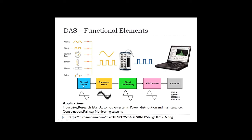The physical system has physical parameters to be measured, and these may be analog or digital in many forms. The transducer converts this physical parameter into electrical output. The electrical output of the transducer may contain some noise or the signal may be weak, so we need amplifiers or filters which form the signal conditioning element. Signal conditioning elements are used to amplify the transducer output or to filter out the noise. We also have an analog to digital converter which converts this electrical output into digital output to be fed to the computer.